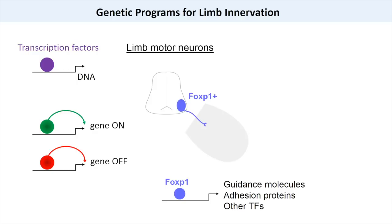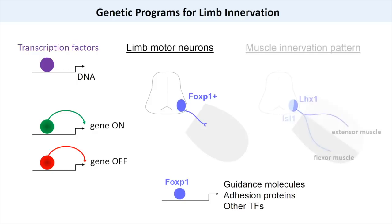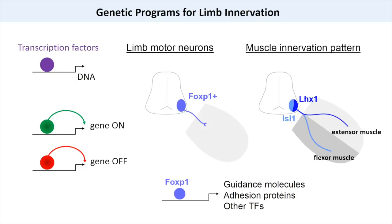Limb motor neurons further differentiate through the actions of additional transcription factors, such as islet 1 and LHX1, which are necessary for motor neurons to control limb extension and flexion.